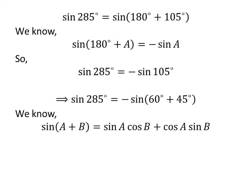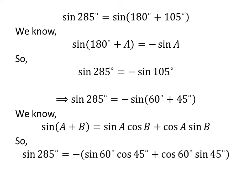We know sine of A plus B is equal to sine of A times cosine of B plus cosine of A times sine of B. Applying this identity gives us: sine of 285 degrees is equal to minus sine of 60 degrees times cosine of 45 degrees plus cosine of 60 degrees times sine of 45 degrees.